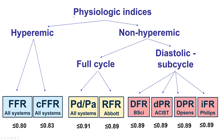The two major categories of physiologic indices are hyperemic and non-hyperemic. FFR is the most validated and most commonly used hyperemic index, with a cut-off of 0.80. There is also contrast FFR — since contrast has a vasodilatory effect — with a cut-off of 0.83 for significant ischemia. For non-hyperemic indices, the cut-off is 0.89 for all indices except PDPA, for which it is 0.91. IFR was the first non-hyperemic index developed and has outcomes trial data, though all others have been shown to be very similar.